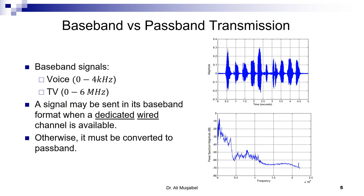There are two types of signals: baseband and passband. Baseband signals are in their natural form, starting from very low frequency up to a maximum frequency. For example, voice starts from approximately zero up to about 4 kHz. A video signal covers about 6 MHz — both are in baseband format, going from very low frequency to their maximum.